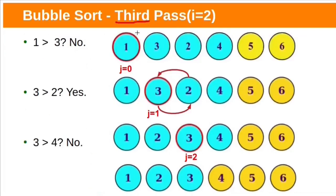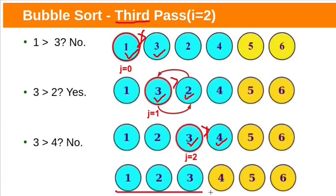In the third pass, the first block is compared with the second block. Here 1 is not greater than 3, so no swap. The second block is compared with the third: 3 is greater than 2, so these two blocks need to be swapped. Finally compare the third block with the fourth block: 3 is not greater than 4, so do not swap. This is the final output after three passes completed.